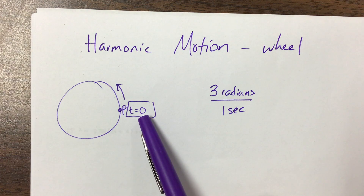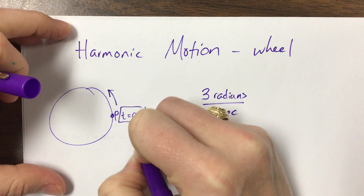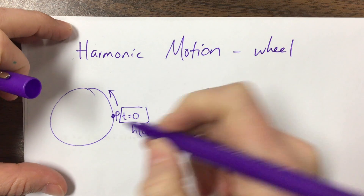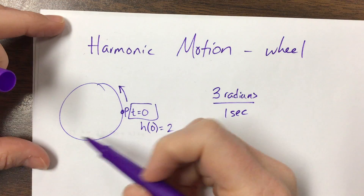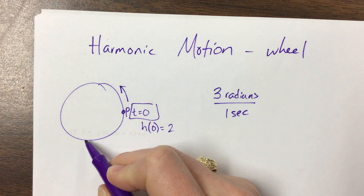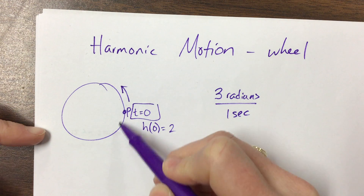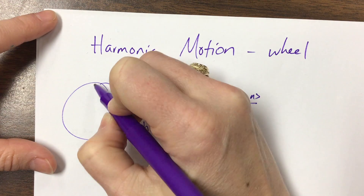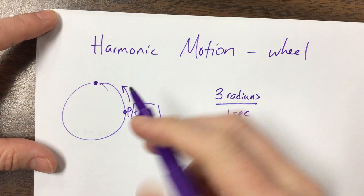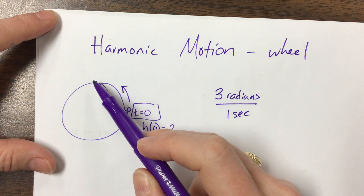So here we are at time 0. We're starting at this point and our height — h(0), the height at time 0 — is going to be equal to 2 centimeters. The radius there is 2 and the bottom of the wheel has a height of 0, which makes sense if you're driving along the ground. Then at the top of the wheel we have a height of 4, since 2 plus 2 more gets us up there.